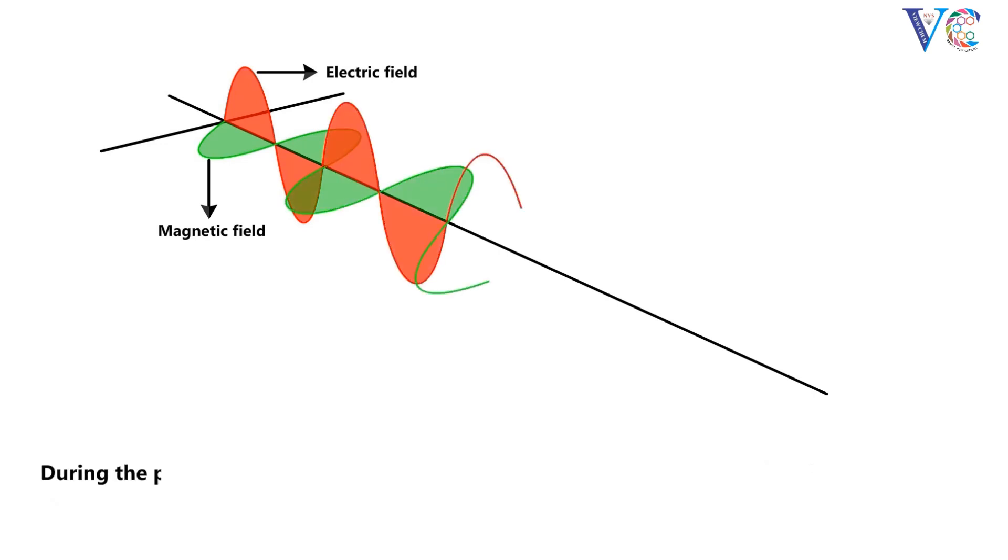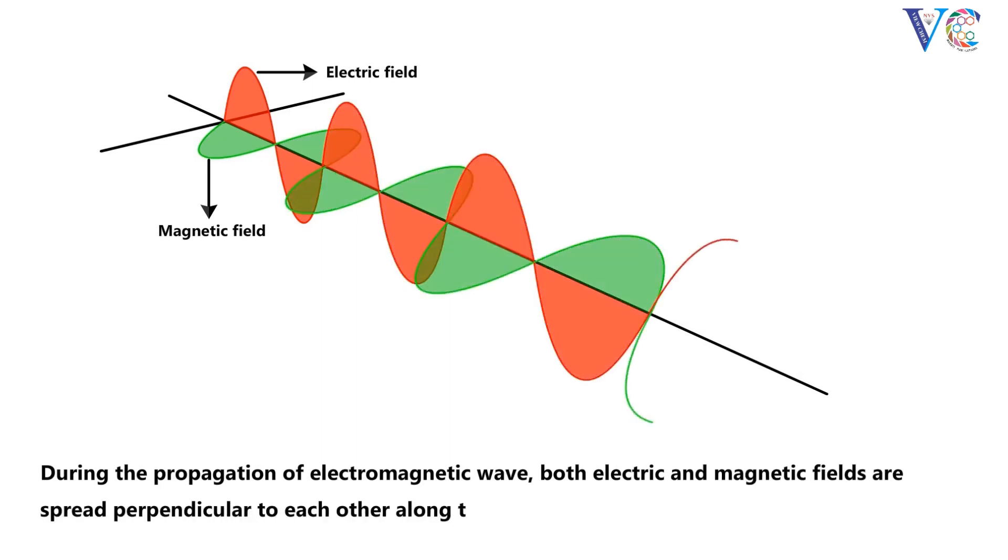During the propagation of the electromagnetic wave, both electric and magnetic fields are spread perpendicular to each other along the direction of wave propagation.